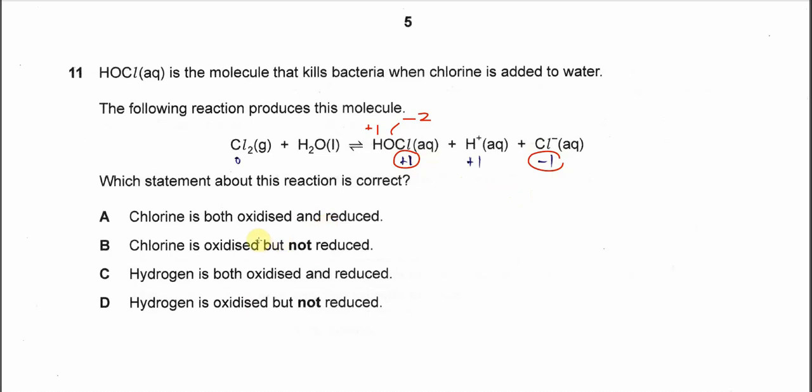Therefore A is the answer. Chlorine is both oxidized and reduced because the oxidation number increased and decreased. It's from two species.